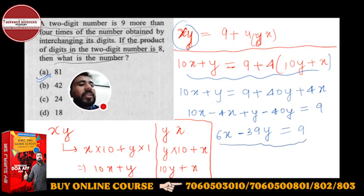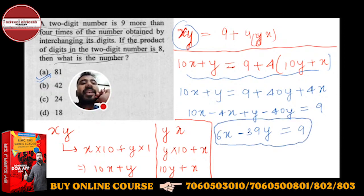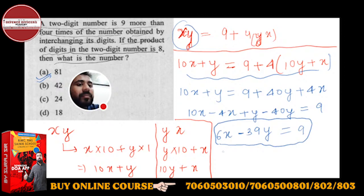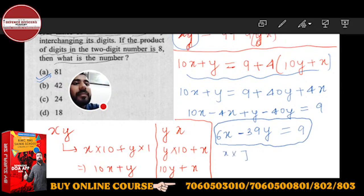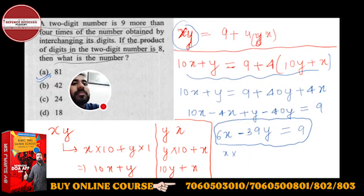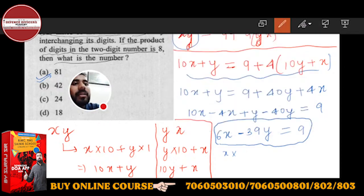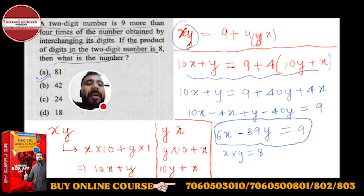This is one equation. From one equation alone you cannot find x and y — you need at least two equations. The second condition given is: the product of digits in the two-digit number is 8. So the second equation is x × y = 8. Now we have two equations: 6x − 39y = 9 and x·y = 8.